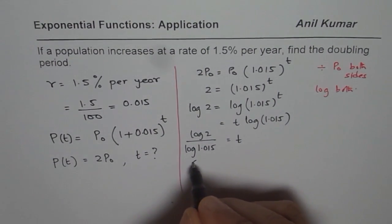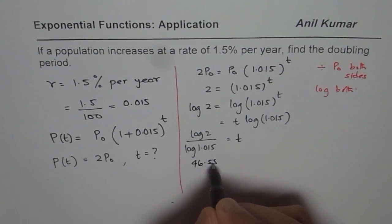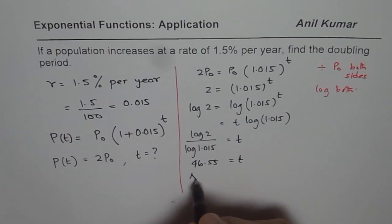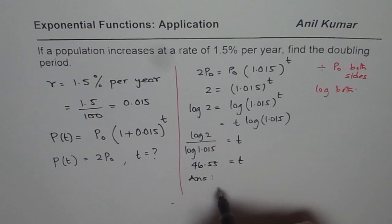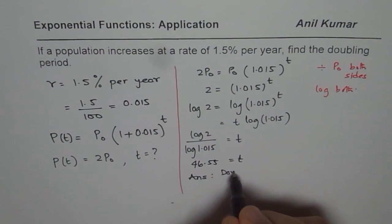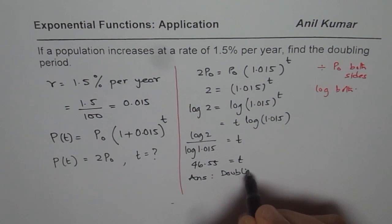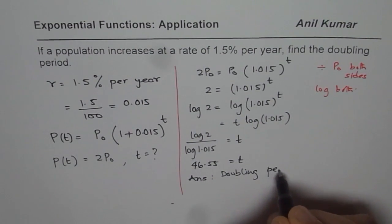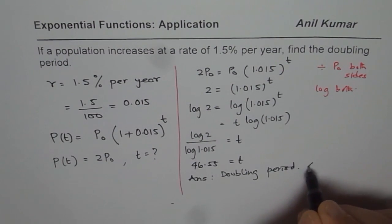So what we get here is 46.55 equals t. And so we can write down our answer as the doubling period is, we'll round it to 46.6 years.